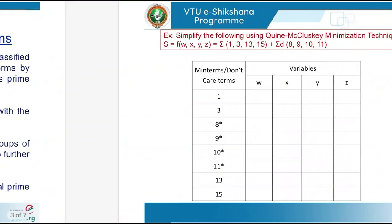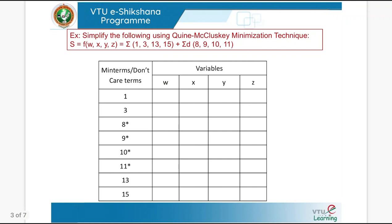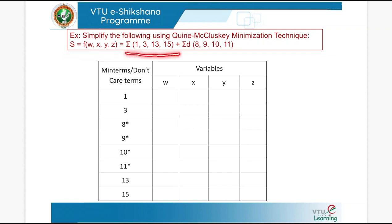Let us solve one problem. Simplify the following using the Quine-McCluskey technique. The problem given is: F(W,X,Y,Z) = Σ(1, 3, 13, 15) + ΣD(8, 9, 10, 11). Here 8, 9, 10, and 11 are the don't care terms.